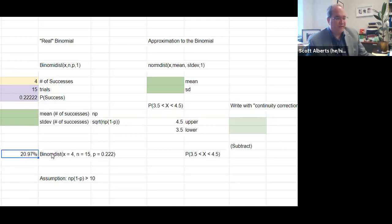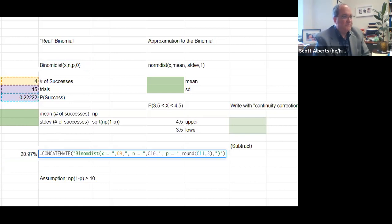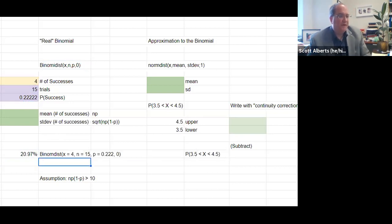We can recreate that here using binom dist. So binom dist of 4, 15, 0.2222. That's how binom dist works, and that's what we did back in chapter six. The question would be, how can we do that approximation?